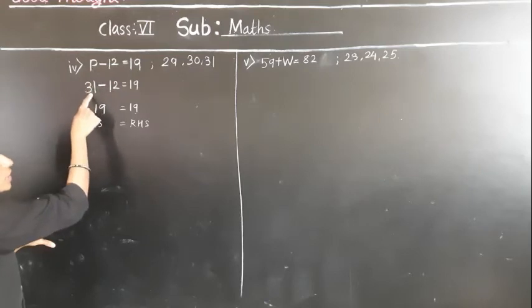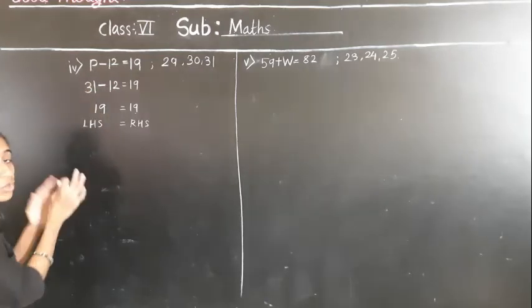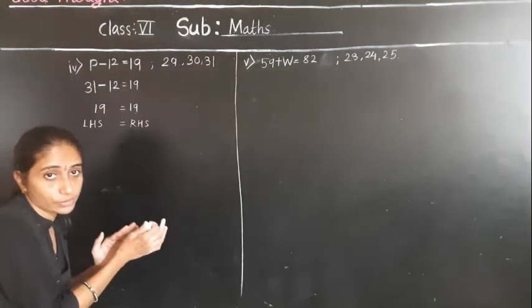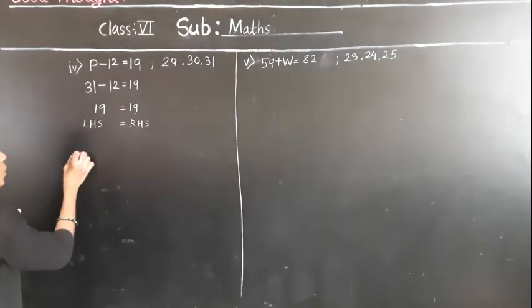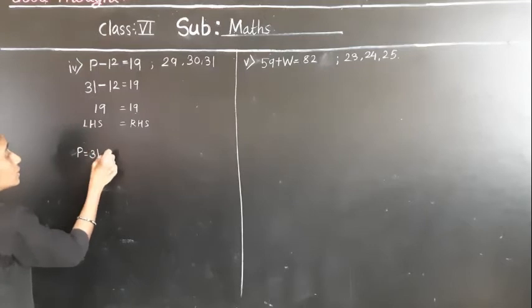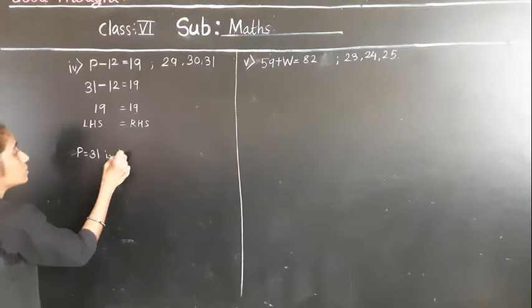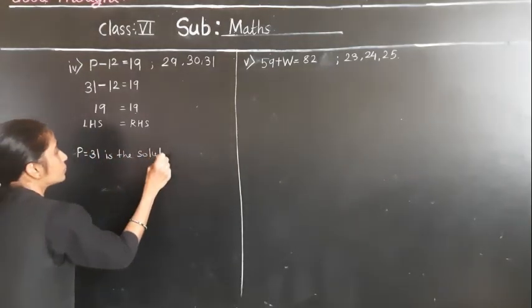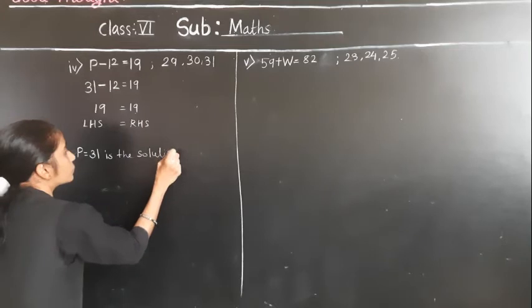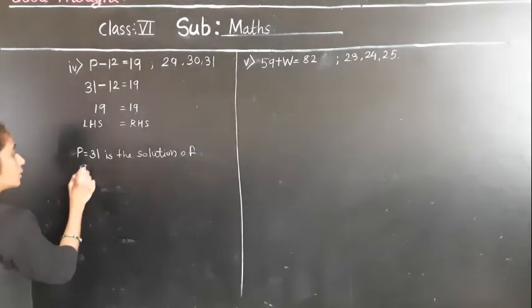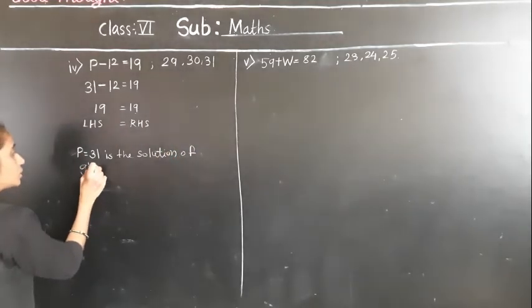In the place of variable when I put 31, then we got left hand side is equal to right hand side. So P is equal to 31 is the solution of the given equation.